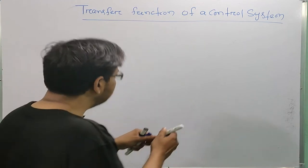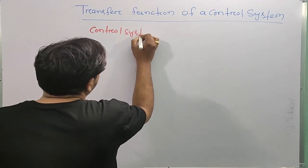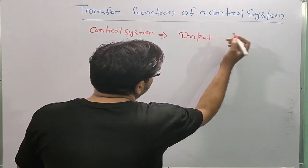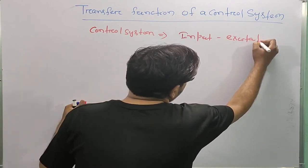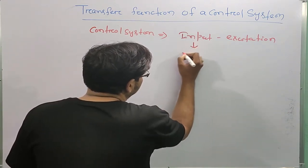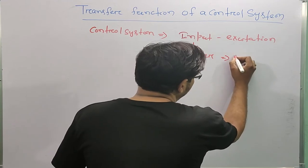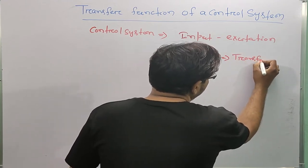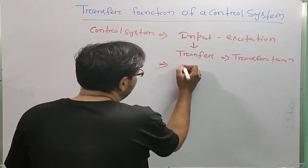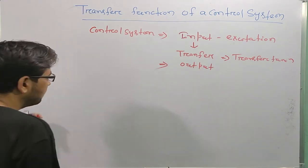If I take a control system, there is an input — this is called the excitation — and there is a transfer function, and then there is an output. So let me draw a block diagram.